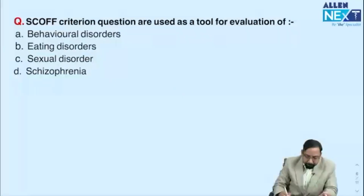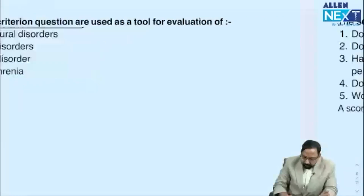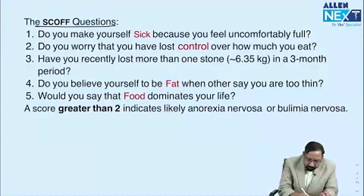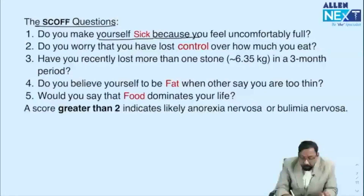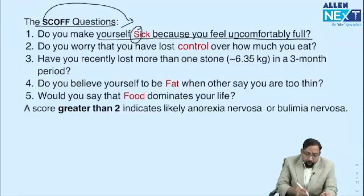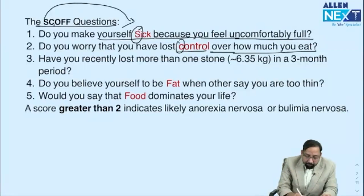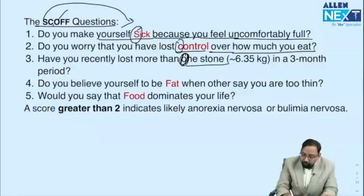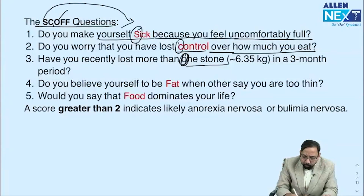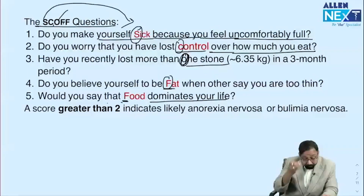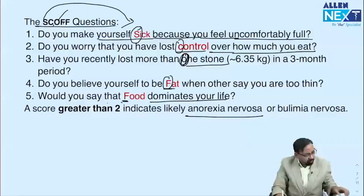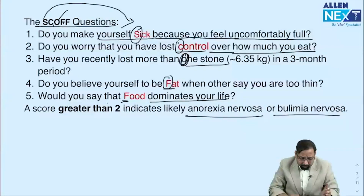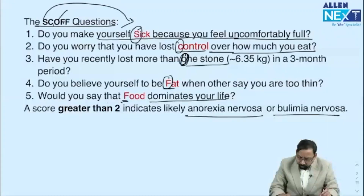Repeat question from a previous exam: the SCOFF criteria or questionnaire is used for eating disorders. There are five questions: S — Do you make yourself Sick because you feel uncomfortably full? C — Do you worry you have lost Control over how much you eat? O — Have you lost more than One stone in a three-month period? F — Do you believe yourself to be Fat? F — Would you say that Food dominates your life? A score of more than two suggests anorexia nervosa or bulimia nervosa.